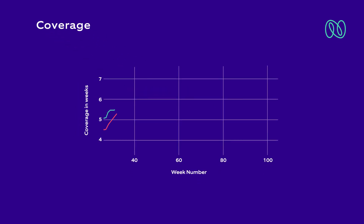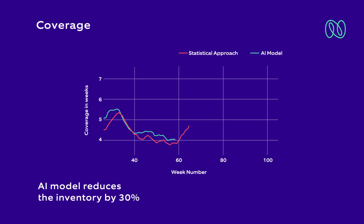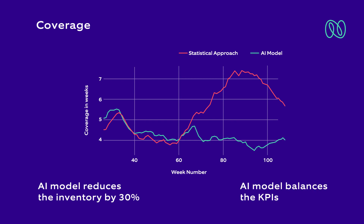Based on the summarized KPIs over 108 weeks, the AI model reduces inventory by 30%. Moreover, this reduced coverage does not impact the cost of service level. The AI model can balance the KPIs so that one KPI is not traded for the other. There is an improvement in important KPIs concurrently.